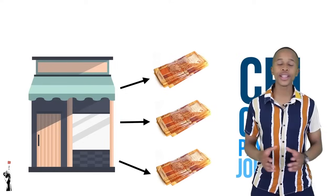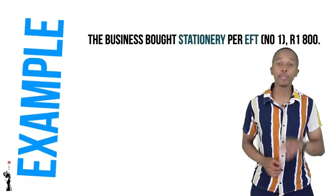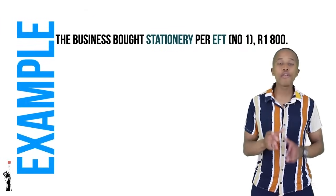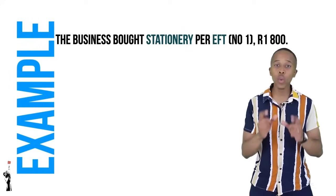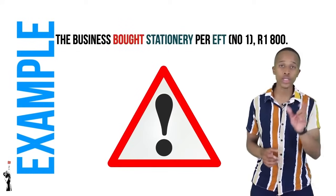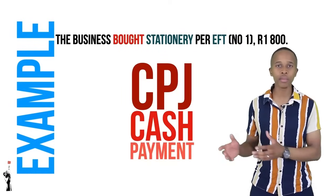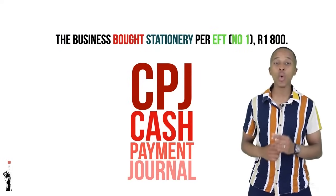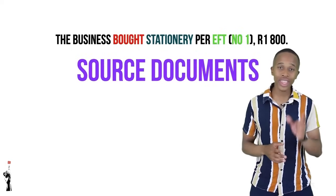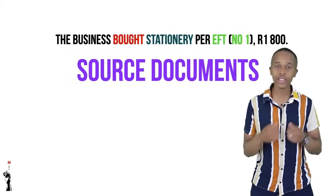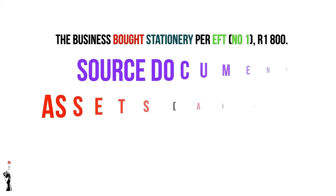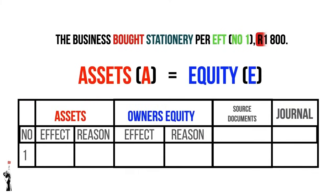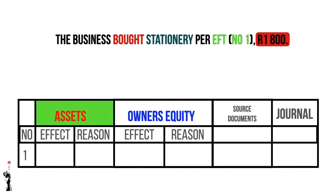Let's look at the second example. The business bought stationery per EFT number 1 for 1,800 rand. Notice it says 'bought,' so we'll be looking at the CPJ — the cash payments journal. The EFT is the method by which the business has done the transaction. Now let's look at the accounting equation and discuss where to place the 1,800 rand.